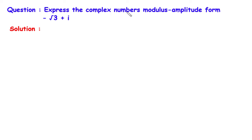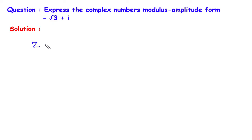Express the complex number in modulus-amplitude form: minus root 3 plus i. Solution: suppose Z is the complex number and it is equal to minus root 3 plus i.